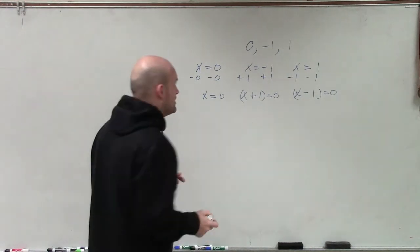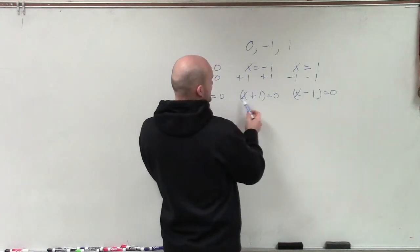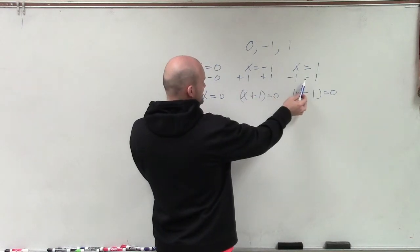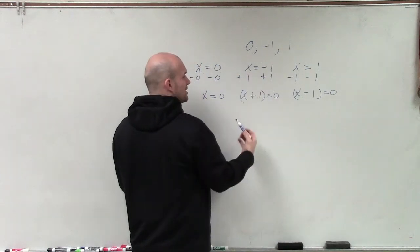So what we'd do is we'd factor this all out to here. Then we'd use the zero product property to define the zeros. So what I'm doing is I'm just working backwards.